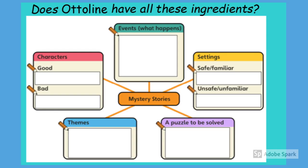This is a mind map of the ingredients of a mystery story. Do you think Otterline has all of these ingredients? Can you fill in the boxes for each of the ingredients linking it to Otterline and the Yellow Cat?